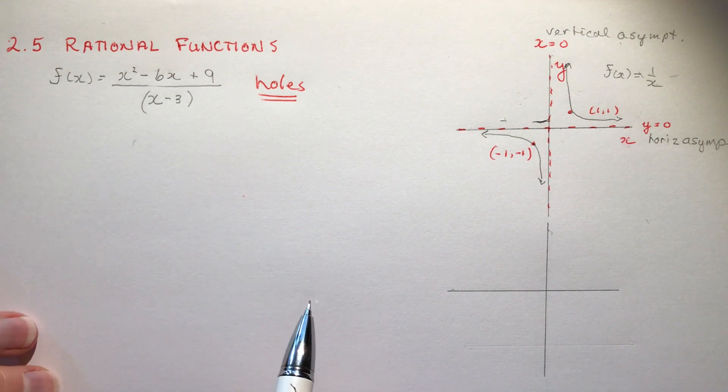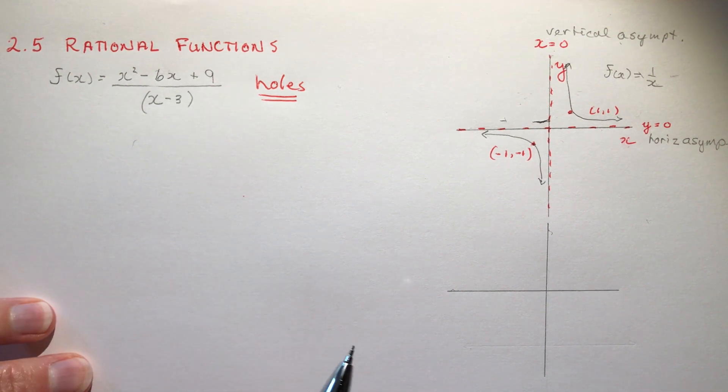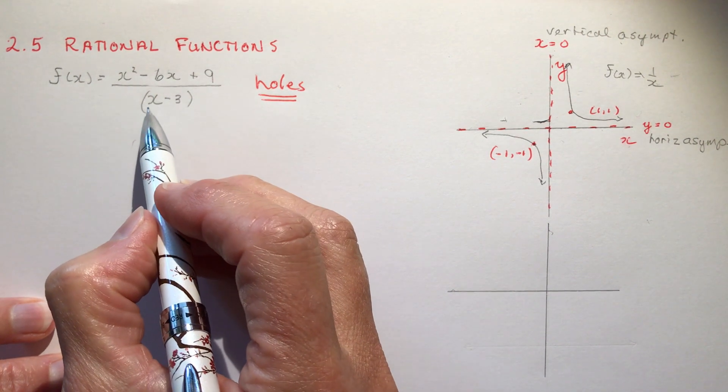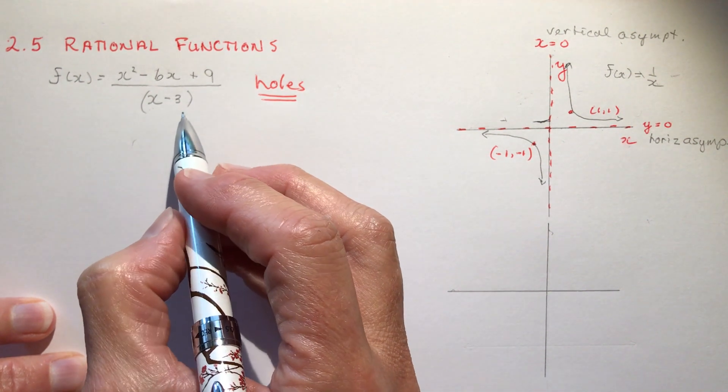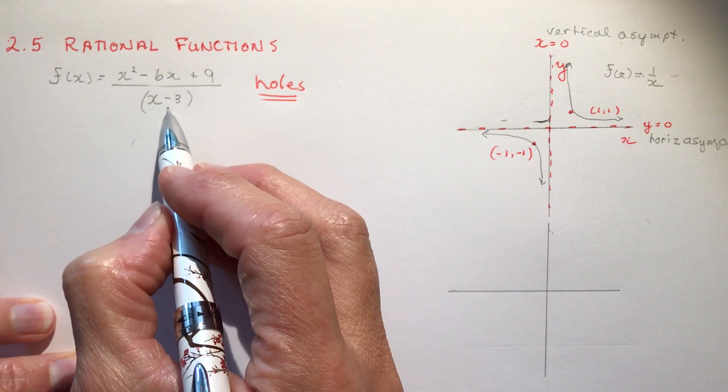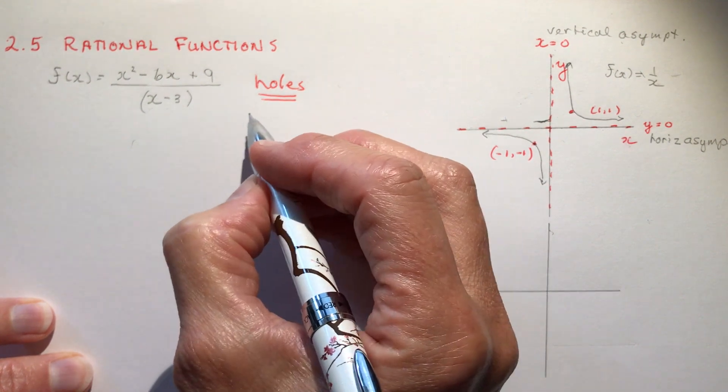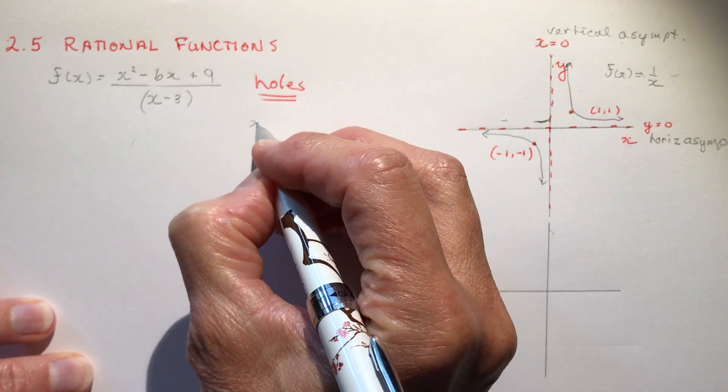And the reason you'll find holes and the check to know if there will be a hole is to check what makes the denominator 0. In this case when 3 is plugged in here that would make the denominator 0 so x can't be equal to 3.